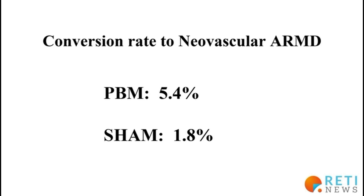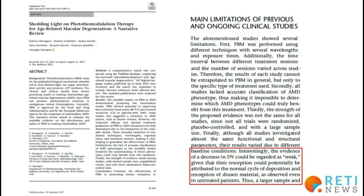This means that if you undergo photobiomodulation, you are three times more likely to transform your dry form into a wet form, where you will need to start receiving sometimes monthly injections for the treatment of your macular degeneration. It is worth reading the work by Kirky's group, where he comments on the limitations of photobiomodulation studies and considers the evidence of drusen volume reduction as weak evidence to justify a treatment for dry form macular degeneration.